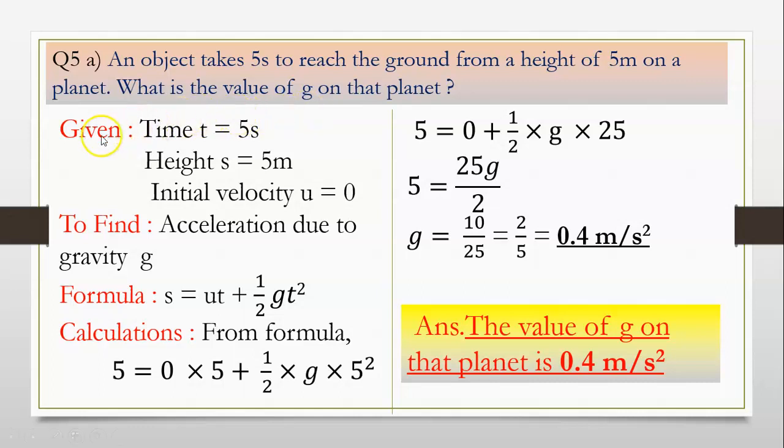So students, you can see we have given, to find, formula, calculations and then the final answer statement. Please follow all these steps. So in case you go wrong in the calculations, then too you will be awarded marks for writing the given, what you need to find and what is the formula. And please remember to write the answer statement after you get the answer and underline it so the examiner can see it properly. Numericals are very scoring students and they are very simple. Please keep practicing more so you can score better marks. Now, we move to the next sum.